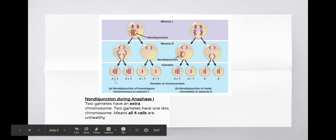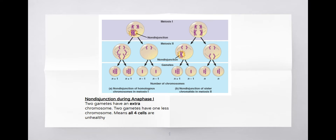That's what you see represented as n+1 and n-1. We know n means haploid - half the amount of chromosomes, which in our case is 23. If I see n+1, it means I have 23 chromosomes plus an extra one. If I see n-1, I know I have 23 chromosomes minus one, so I'm at 22.